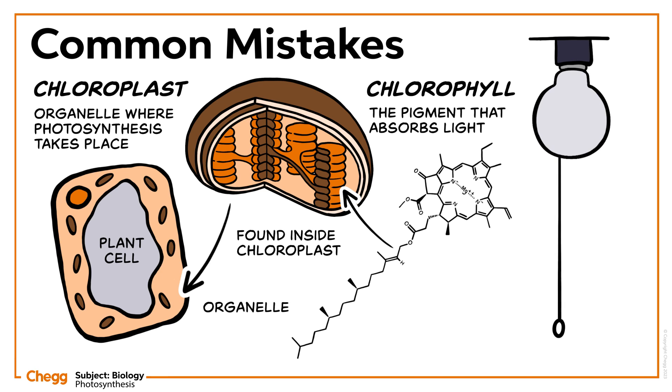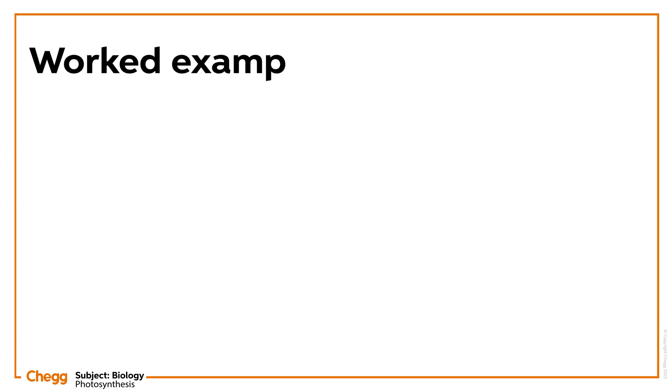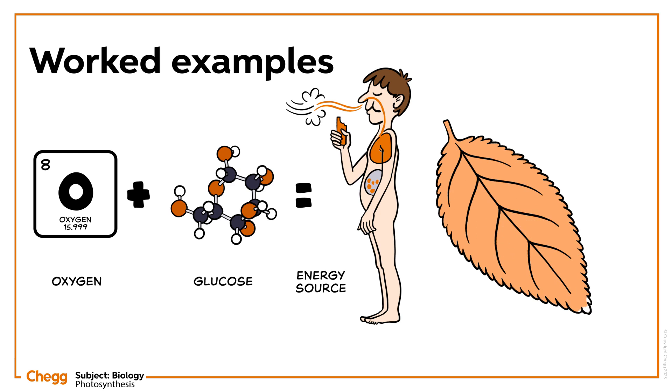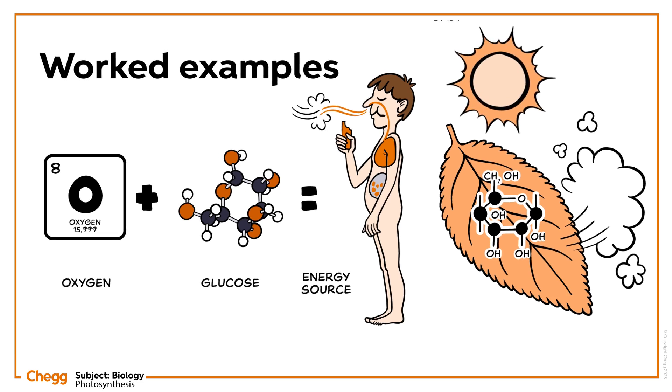The light-independent reactions are often termed the dark reactions, as they don't need light. Real-world examples: As we all know, oxygen is essential for the sustainability of life on Earth. Also, glucose is an essential source of energy for human beings to survive. Both oxygen and glucose are produced in the process of photosynthesis.